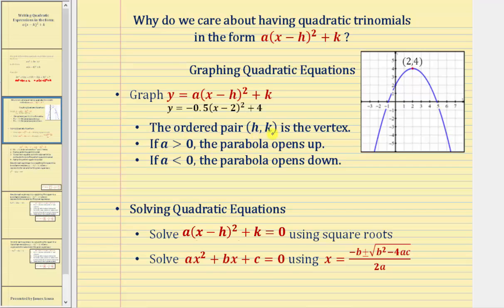The ordered pair H comma K is the vertex of the parabola, which is the high point if the graph opens down, or the low point if the graph opens up. Notice how here H is positive two and K is four, giving the ordered pair two comma four, which is the vertex of the parabola. It's also true that if we're solving a quadratic equation in this form, we can use square roots to solve for X by isolating the squared part and then taking the square root of both sides.